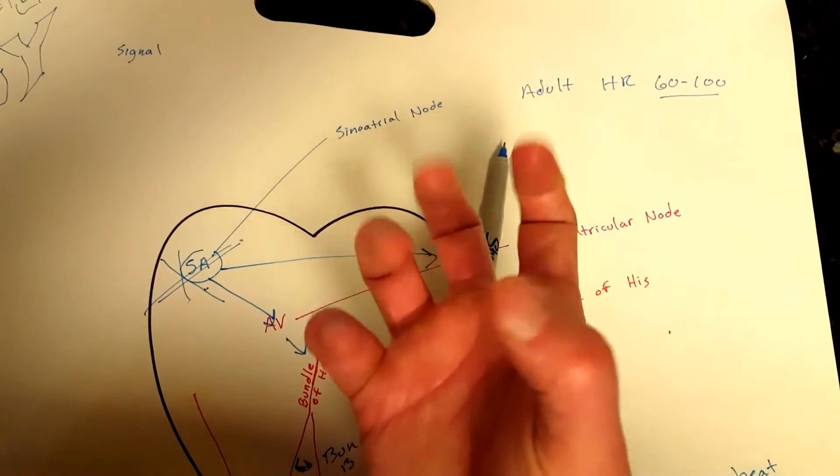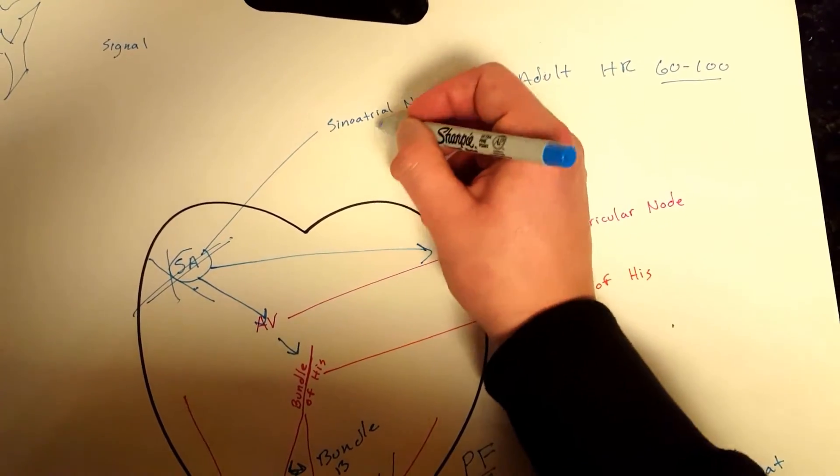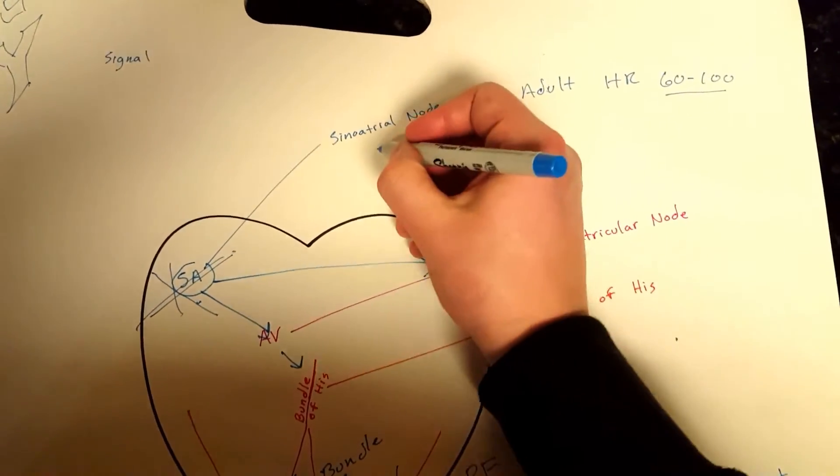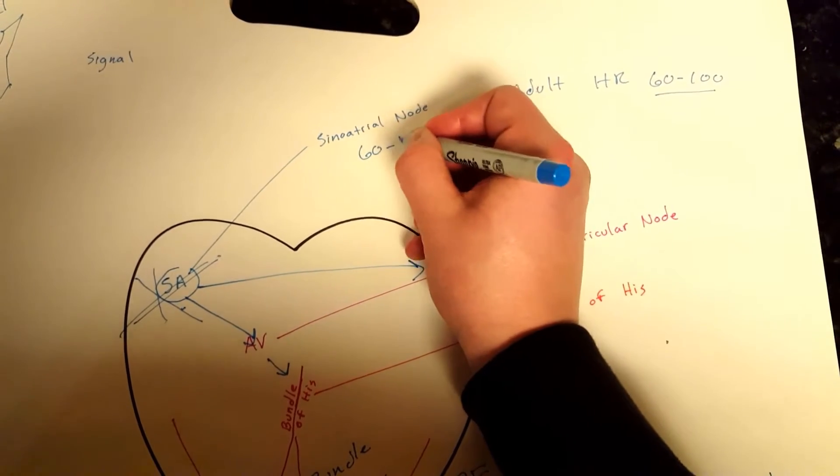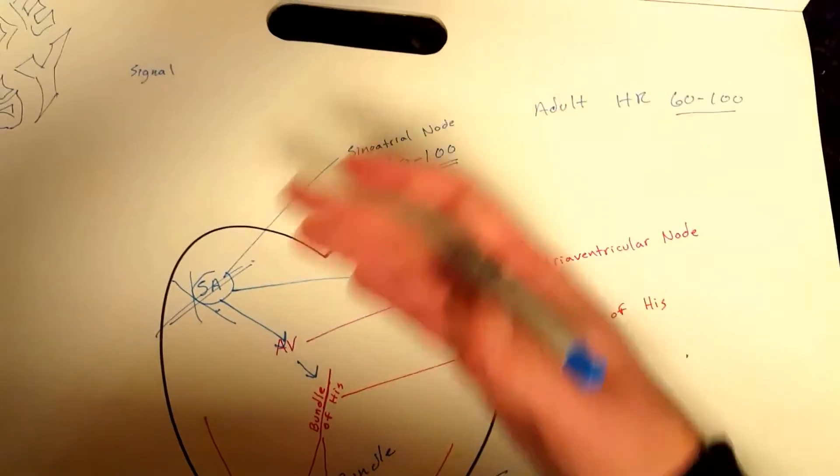So your sinoatrial node will send out between 60 and 100 signals per minute on average.